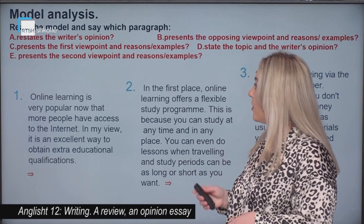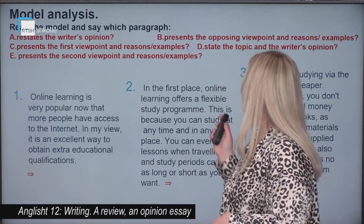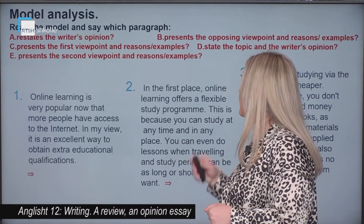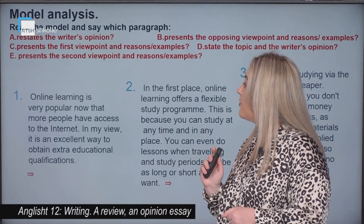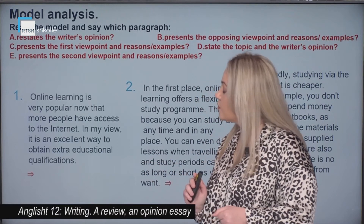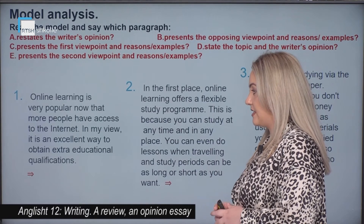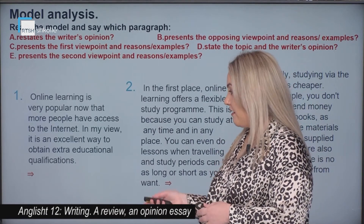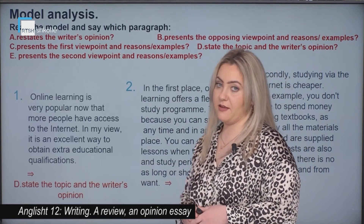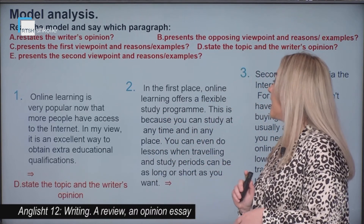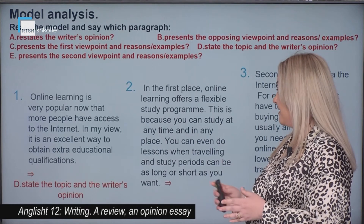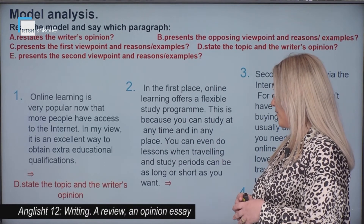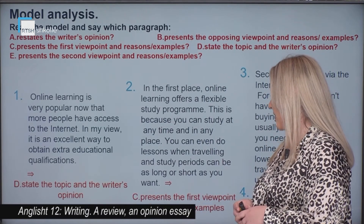Now, a model analysis. Read the model and say which paragraph restates the writer's opinion, presents the opposing viewpoint and reasons or examples, the first viewpoint and reasons, states the topic and the writer's opinion, and presents the second viewpoint and reasons. The first paragraph: 'Online learning is very popular now that more people have access to the internet. In my view, it is an excellent way to obtain extra educational qualifications.' This paragraph states the topic and the writer's opinion. The second paragraph: 'In the first place, online learning offers a flexible study program. This is because you can study at any time and in any place. You can even do lessons when traveling, and study periods can be as long or short as you want.' This paragraph presents the first viewpoint and reasons or examples.